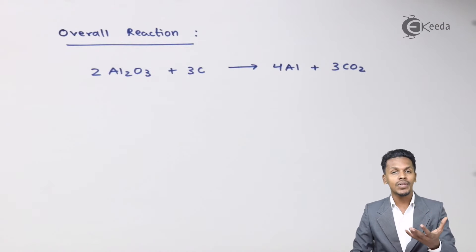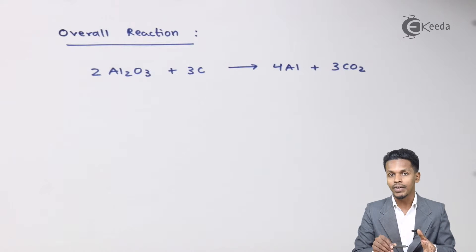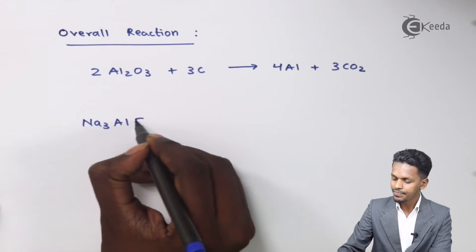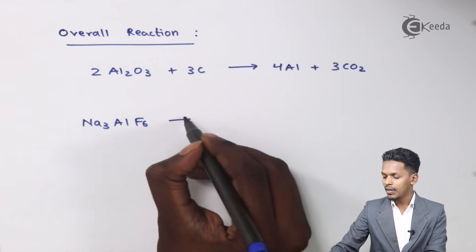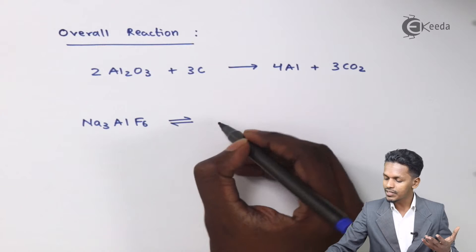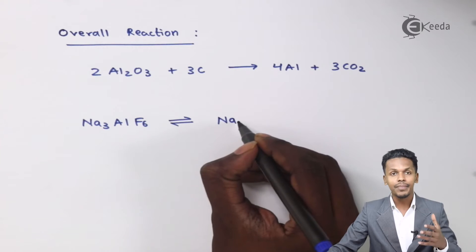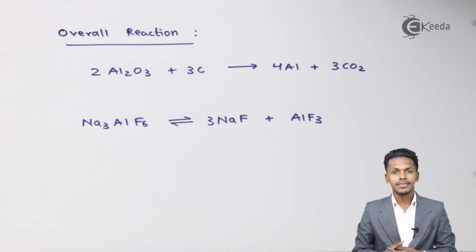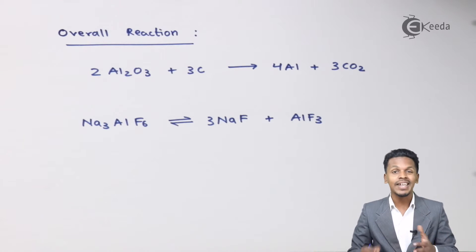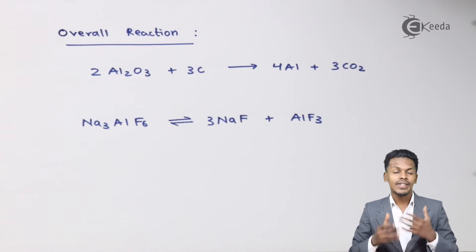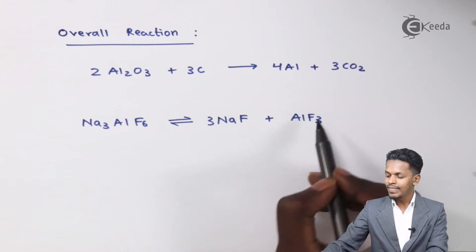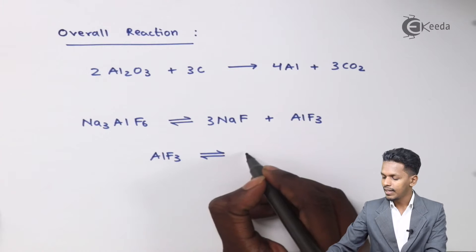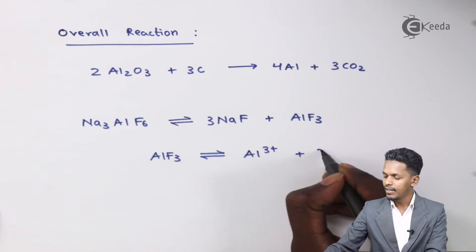Not only Al2O3 but also cryolite, that is Na3AlF6, is present in the solution in molten form. At high temperature, cryolite will dissociate in such a manner that we get 3 moles of NaF along with AlF3. This AlF3 that is present in the solution can also be reduced, and thereby we can obtain aluminum from it. That is the reason we are considering the anodes and cathodes. AlF3 can be dissociated into Al3+ and 3F− ions.